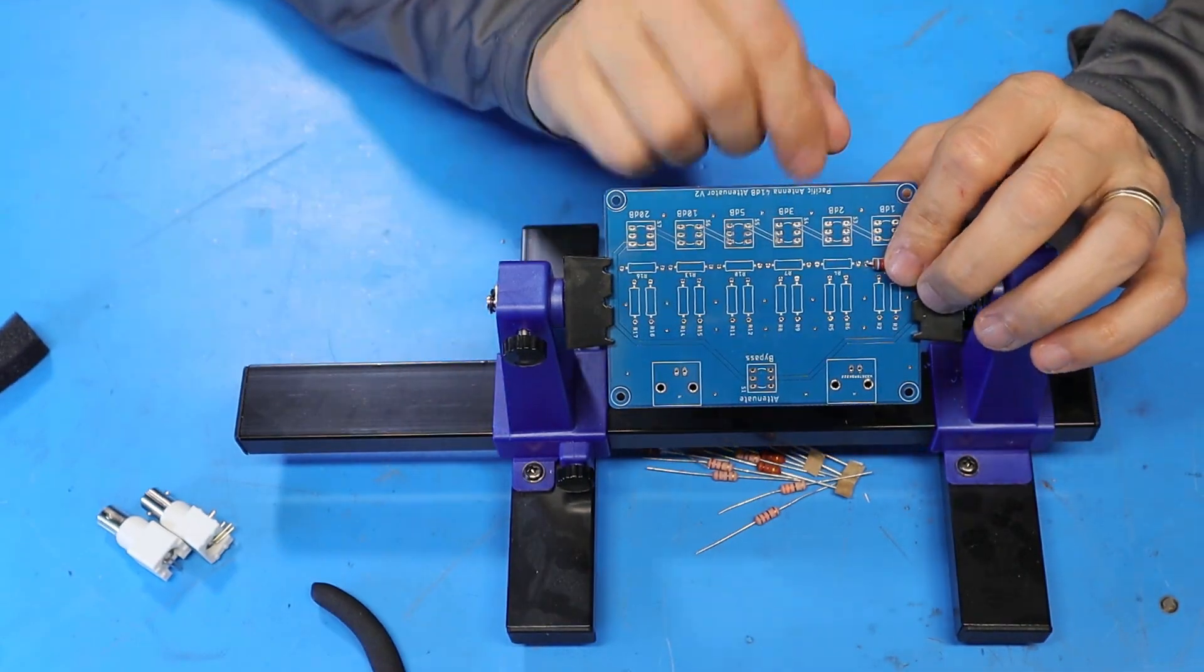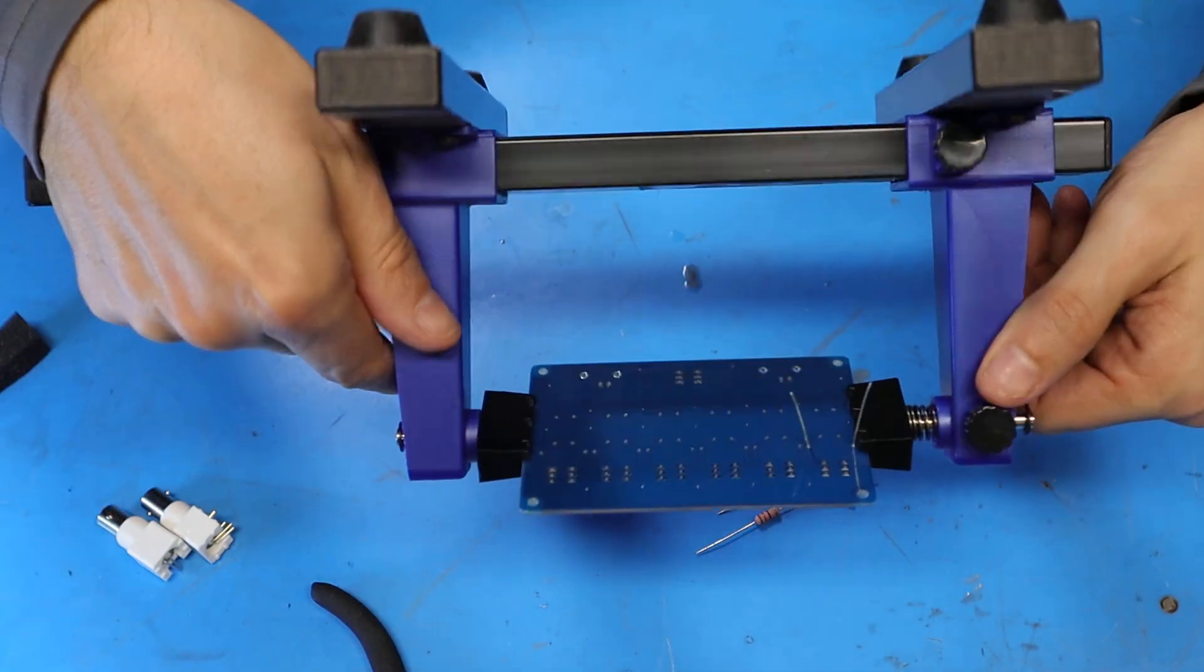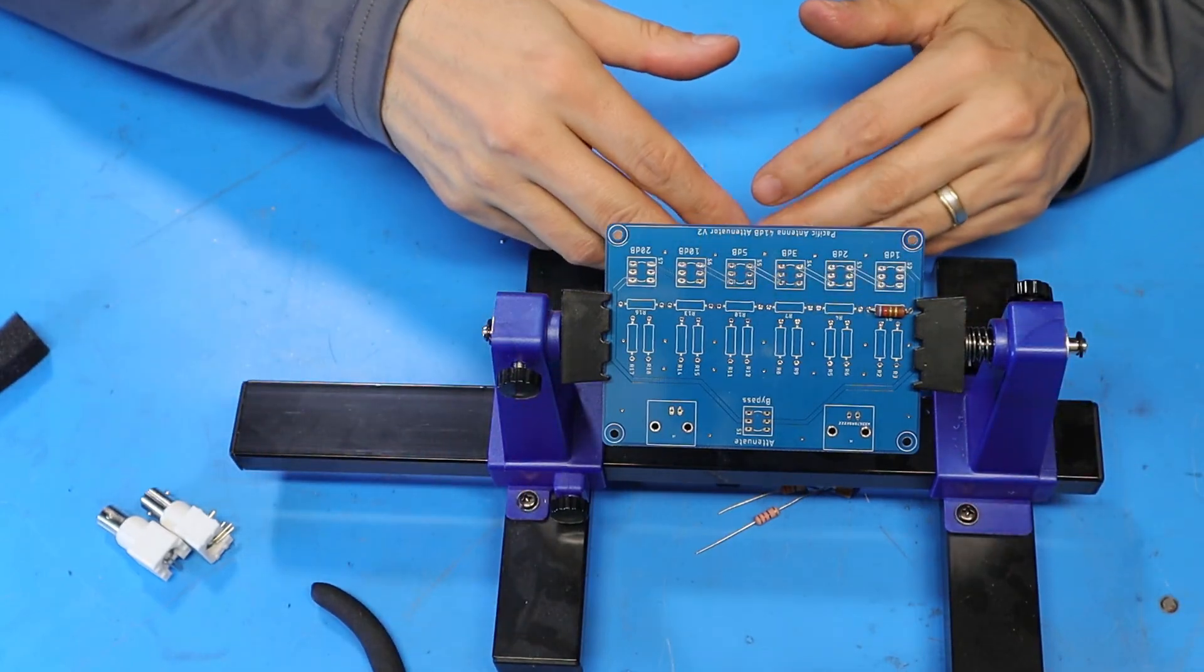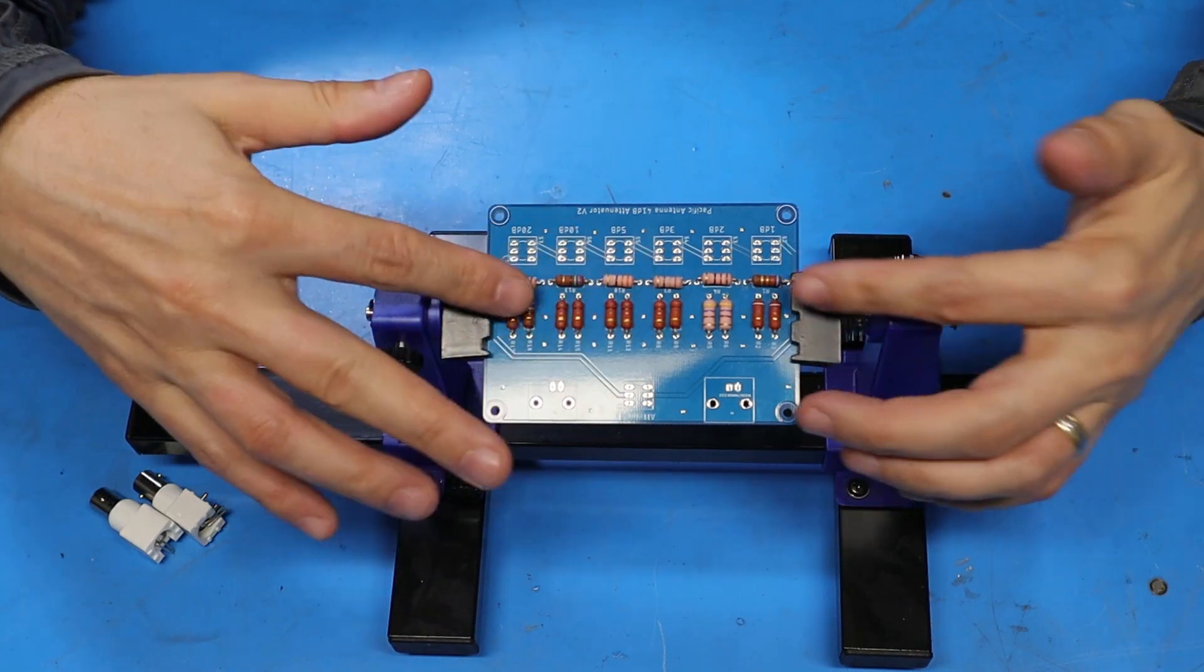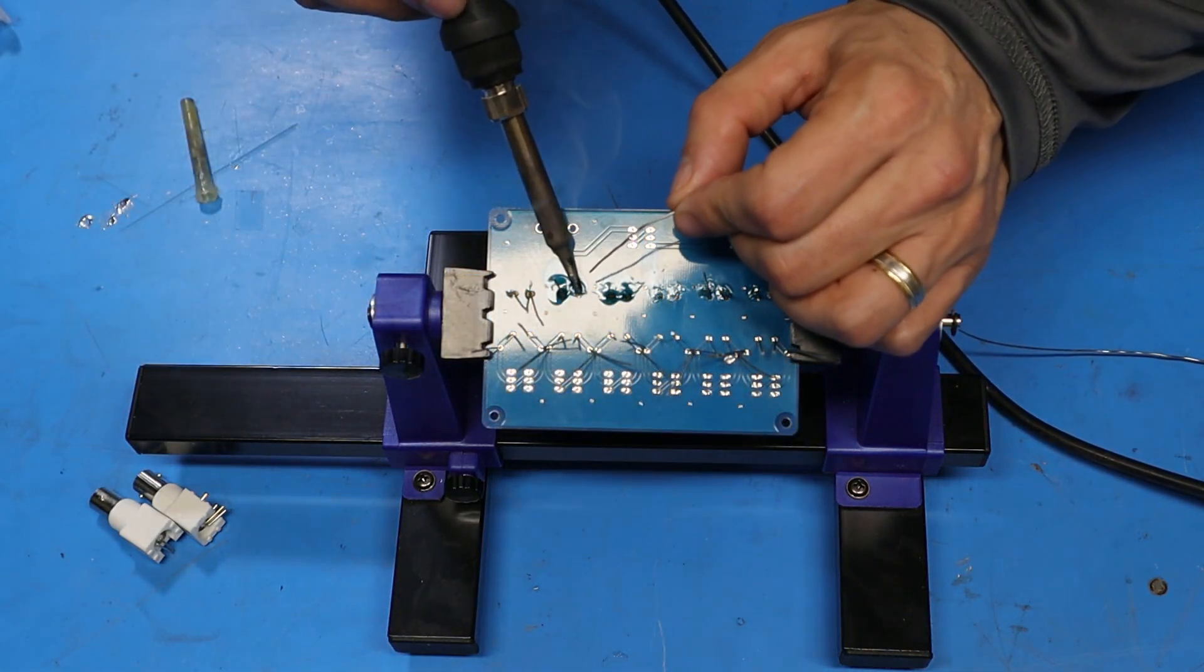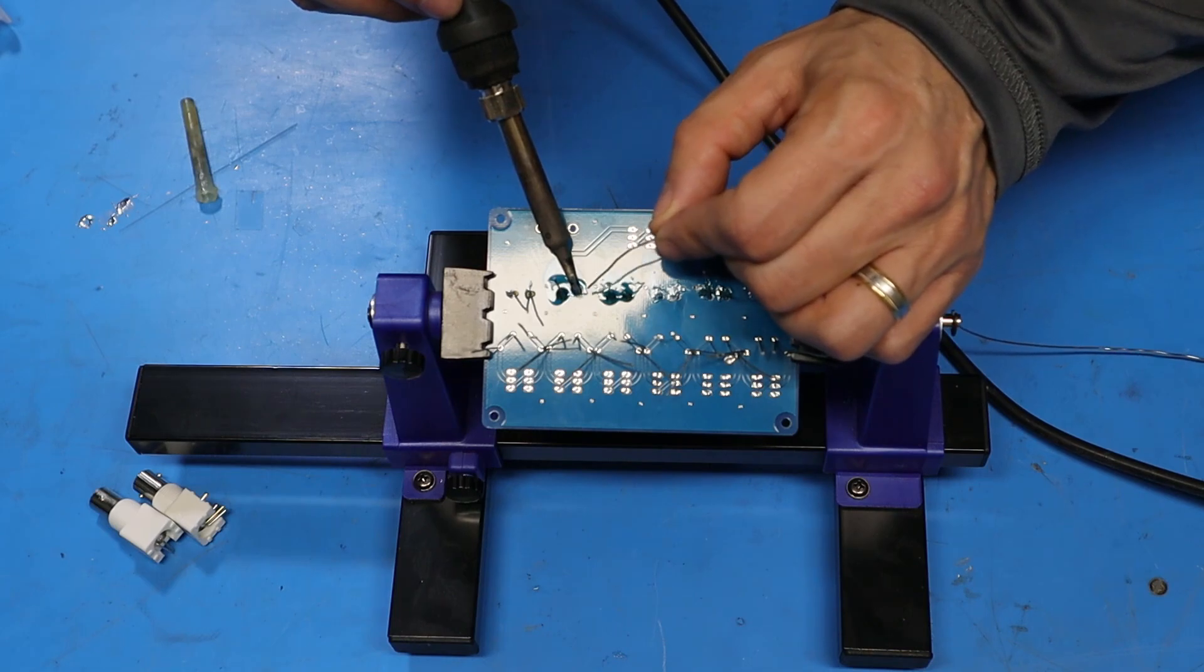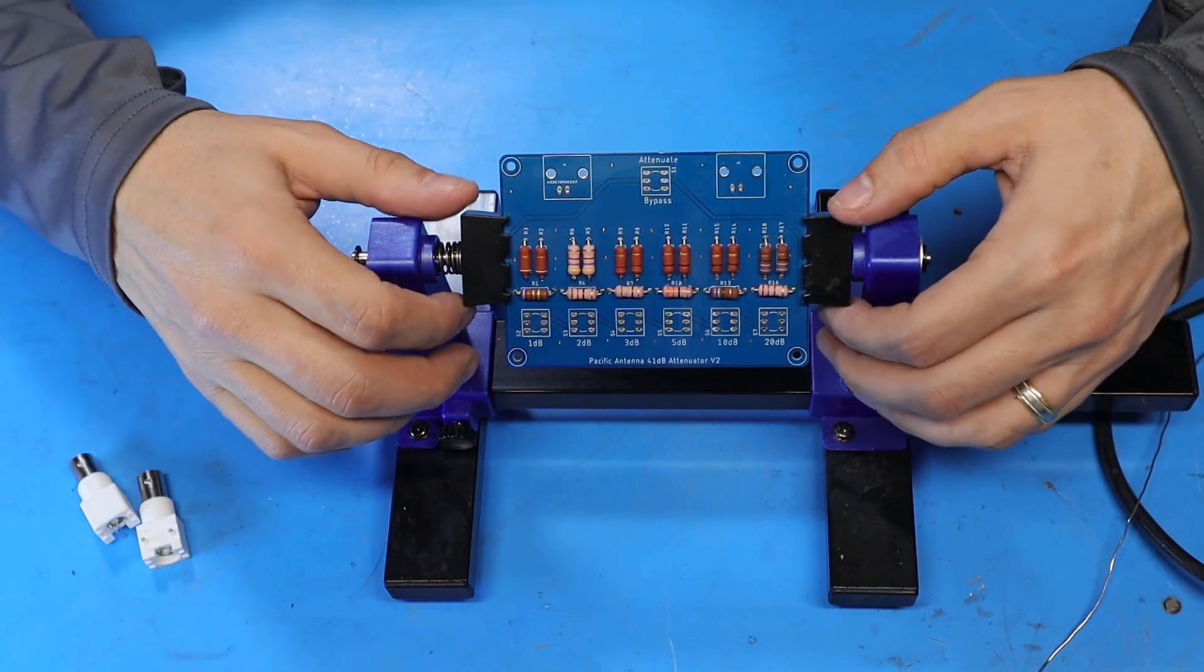Once I get that seated down on the board I'll just bend the leads on the backside out a little bit so the part can't fall out. Now I'll continue on with the rest of the resistors until I get the board populated. As you can see I've got all the resistors loaded in. Now I'm going to flip this over and solder these leads. As you can see I've got all the resistors soldered in.